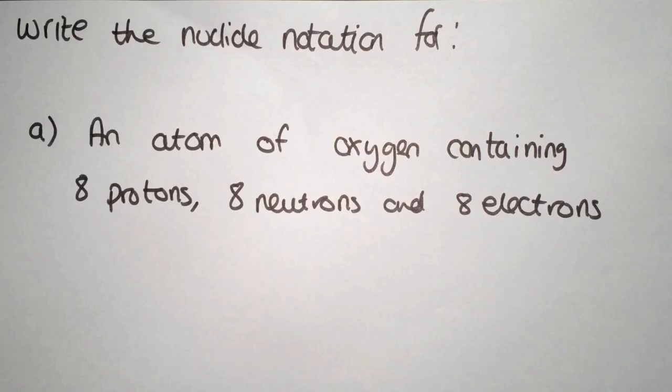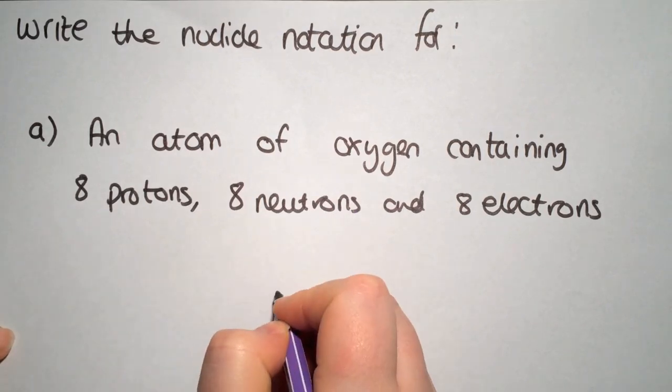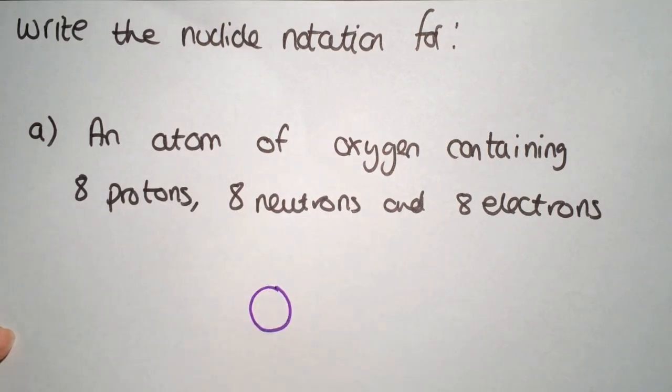The other thing that you could be asked to do is to write a nuclide notation. So the first thing you need to do is find out what element that you are looking for. So we are looking at an atom of oxygen. So it has a symbol of O.